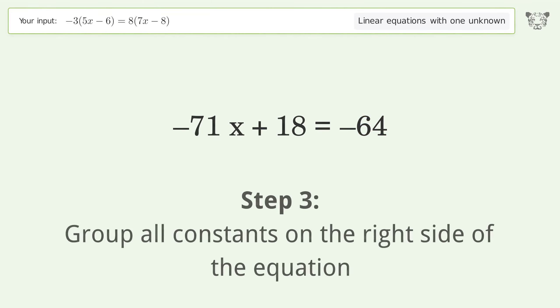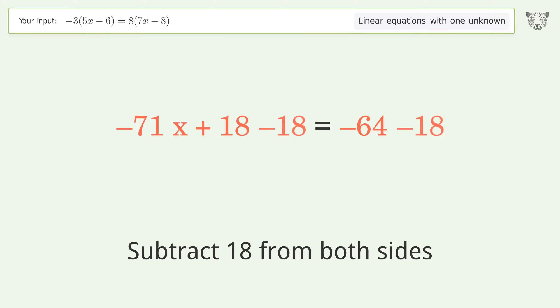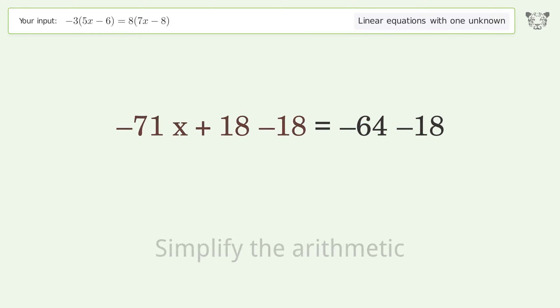Group all constants on the right side of the equation. Subtract 18 from both sides, then simplify the arithmetic.